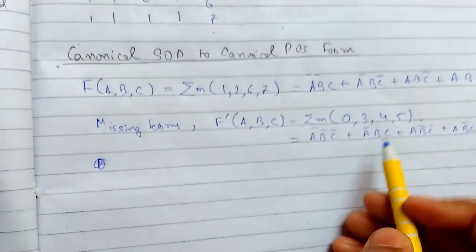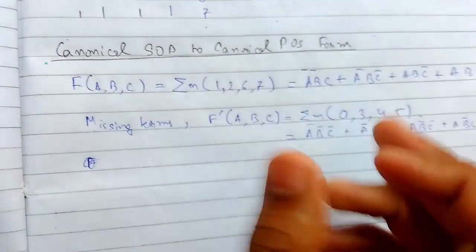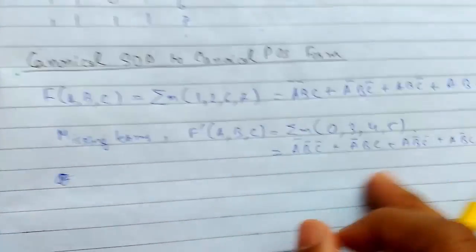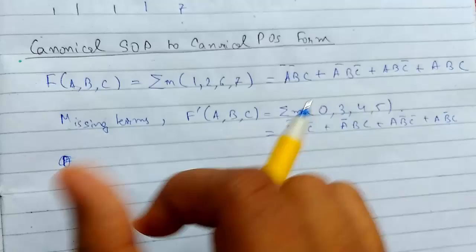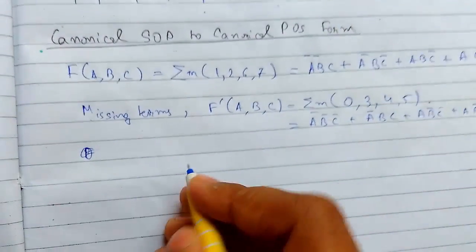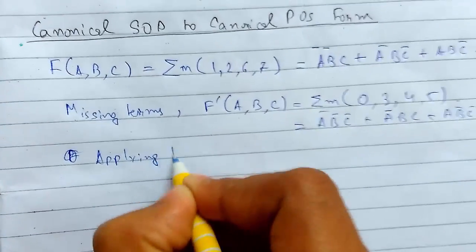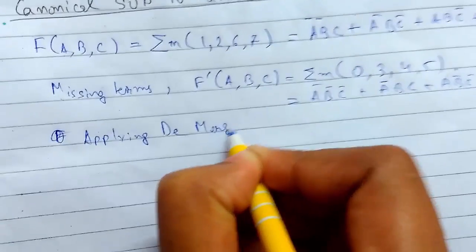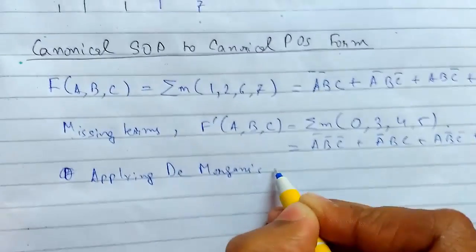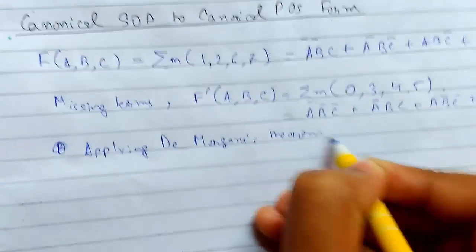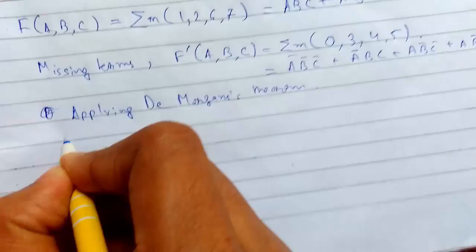So now we need the complement of the function. On complementing this function, we will get the POS form. We will do this by applying De Morgan's theorem, and we get...